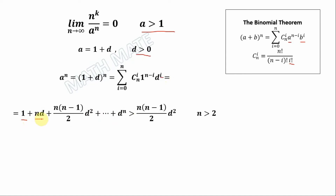As you can see, all the addends here are positive because d is positive and n is also positive. For this reason, we see that this sum equals this addend plus some positive values, so we can write that a^n is greater than only this addend. This is true for all n more than 2.